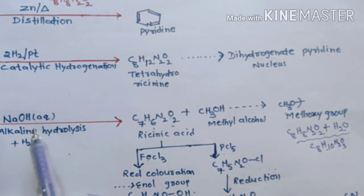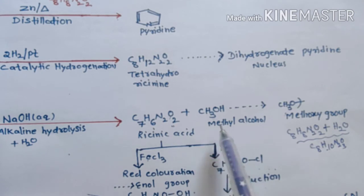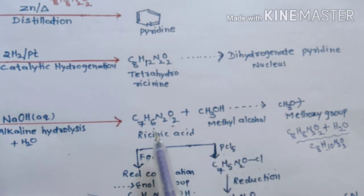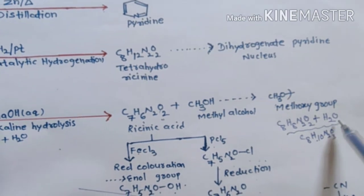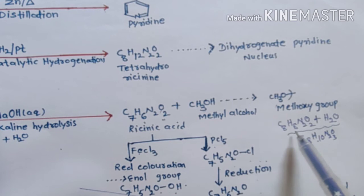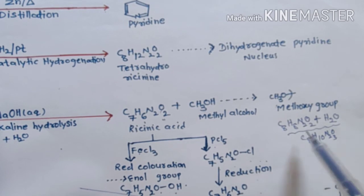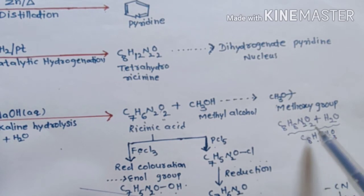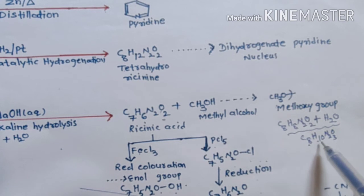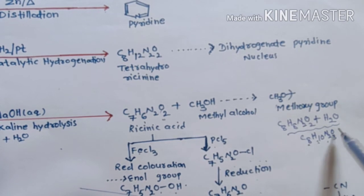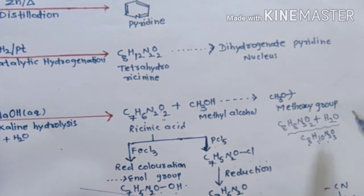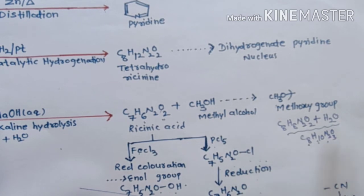it gives us methyl alcohol along with another compound known as resinic acid. In the hydrolysis, it takes one water molecule. The formula of ricinine is C8H8N2O2; combined with water this gives an overall formula of C8H10N2O3. Removing the methyl alcohol formula from this gives the formula of resinic acid.